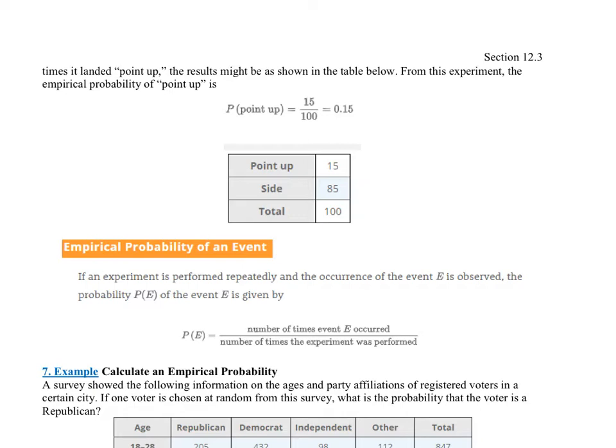Instead of it being a theoretical probability of what should happen, what we have now is an empirical probability of what did happen. If I wanted to know the probability of it landing point up, I would say how many times did it land point up, which was 15, over how many total times, which was 100. So the empirical probability would be 15 one-hundredths, which is the same thing as 0.15.